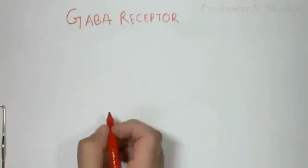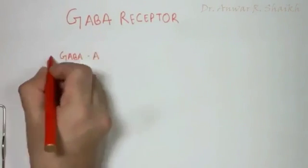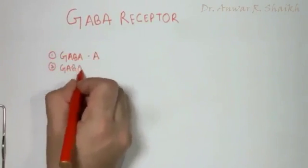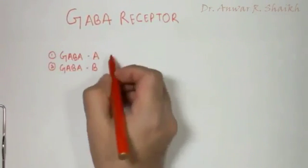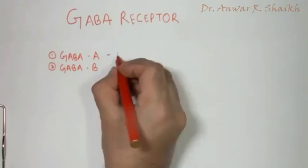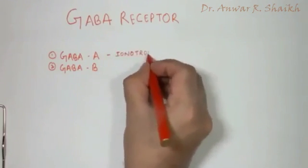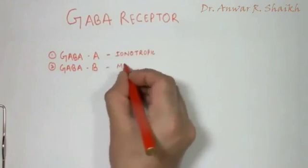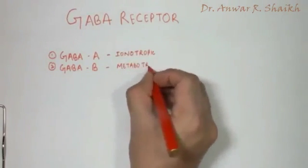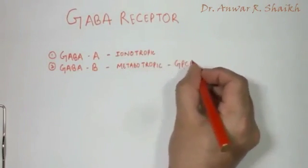GABA receptors are generally two types: GABA-A and GABA-B. GABA-A is a type of ionotropic receptor, whereas GABA-B is a type of metabotropic or G protein coupled receptor.